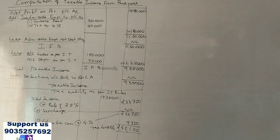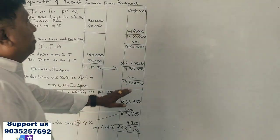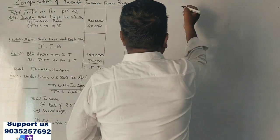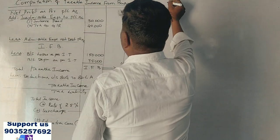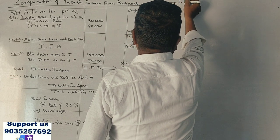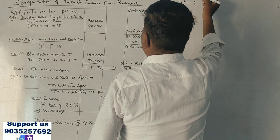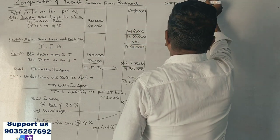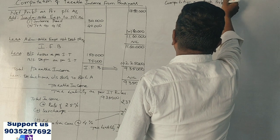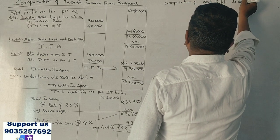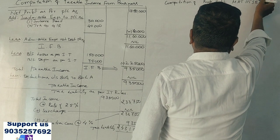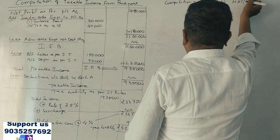Now we need to calculate tax liability under Section 115JB, which is the MAT (Minimum Alternate Tax) provision.